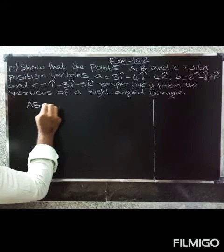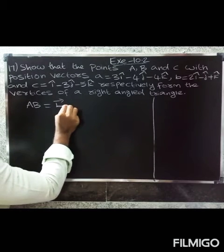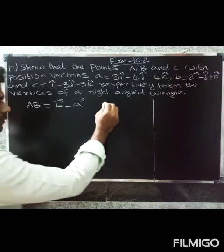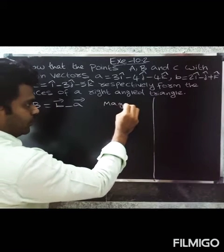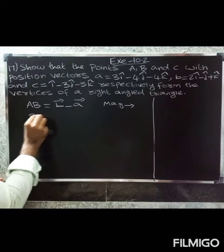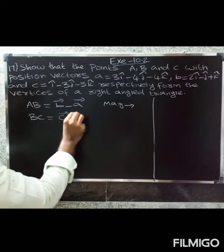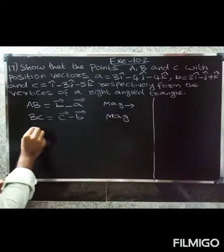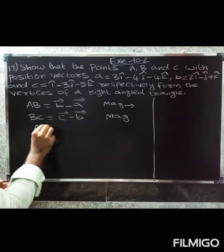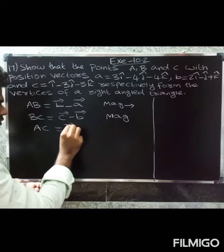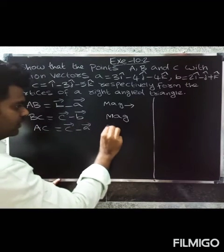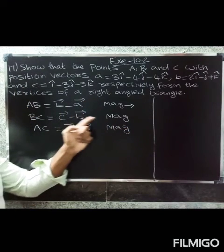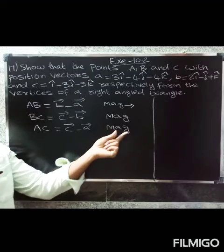To solve this, we compute AB equal to b vector minus a vector, then find its magnitude. Next, BC equals c vector minus b vector and we find its magnitude. Then AC equals c vector minus a vector and we find its magnitude of AB, magnitude of BC, and magnitude of AC.